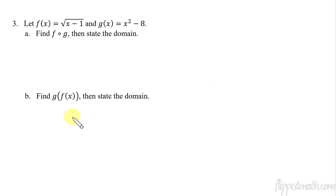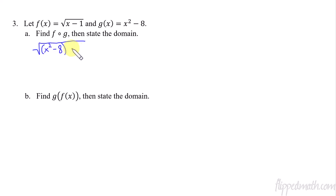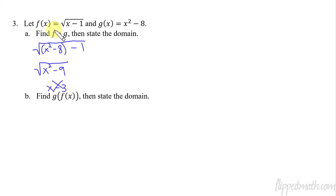Let's do two quick problems. The first one: find f of g. Remember, f of g means g is getting plugged in — it's f of g of x. So we're going to take x squared minus eight and plug it into that x. So that x becomes x squared minus eight, and then minus one. That simplifies down to x squared minus nine. Please do not think that this means x minus three — it does not simplify to x minus three. You can't simplify that. That is the function f of g of x.